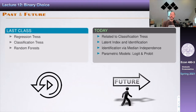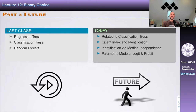Today is going to be related to classification trees, despite the fact that we're going to take a different approach. We will not always care about prediction. We're going to specifically talk about the so-called latent index models or linear index models, and we're going to divide the lecture into identification — what identifies this particular model when we impose parametric and semi-parametric assumptions — and then estimation in the parametric case, covering the logit and probit models.